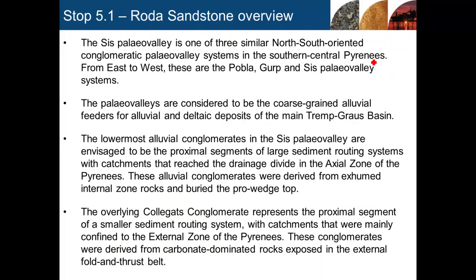I'm now going to return to the younger Oligocene Cis conglomerate, which we said was in a feature called the Cis Paleo Valley. That's one of three similar paleo valleys which trend north-south and overlie and cut across thrust systems along the northern margin of the various basins in the south-central Pyrenees. Those paleo valleys, including the Cis Paleo Valley, are considered to be the main rooting systems — the main areas through which clastic sediment was fed into the Trebgrass Basin.